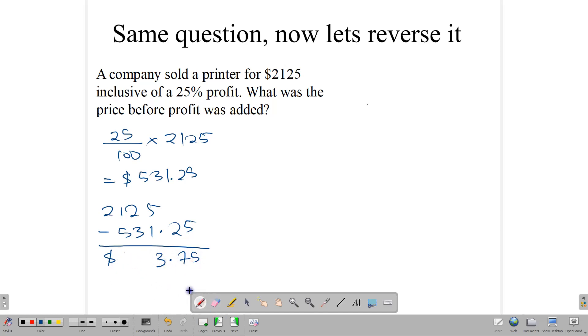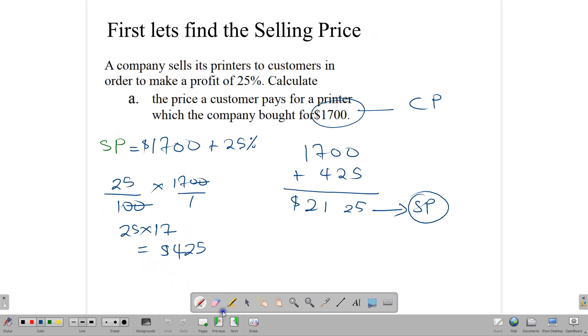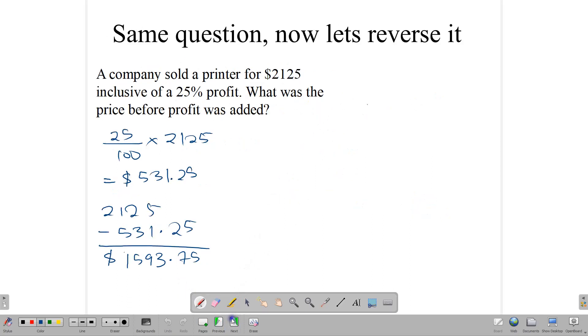And this would leave them with an answer of $1,593.75. Of course, this answer is incorrect because we already know that our cost price is supposed to be $1,700. So how do we do it properly? How do we reverse that percentage without making this kind of error?